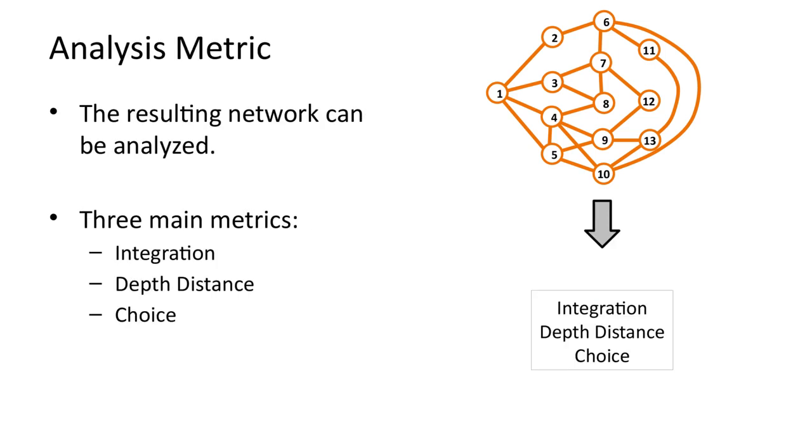The resulting network can be analyzed. Space Syntax defines a set of its own metrics, the three main ones being integration, depth distance, and choice.